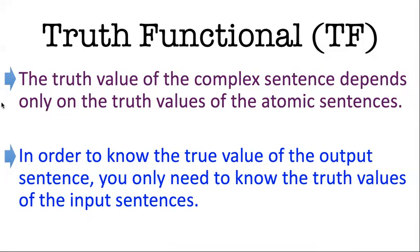Another way to think about it: if you're trying to know the truth value of the complex sentence — the output sentence — what do you need to know? Do you only need to know the truth values of the input sentences, or do you need to know more? If you only need to know the truth values of the input sentences, then it's truth functional. If you need to know more — like what those input sentences mean, what they're talking about in the world — then it's not truth functional.